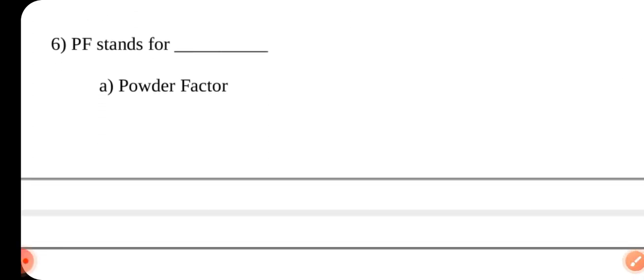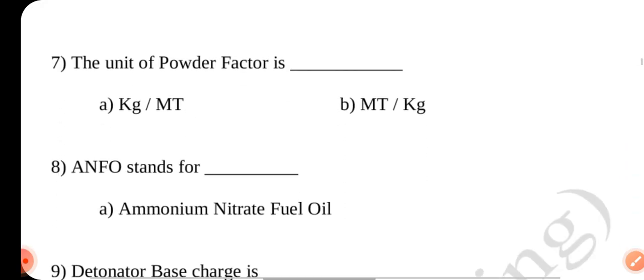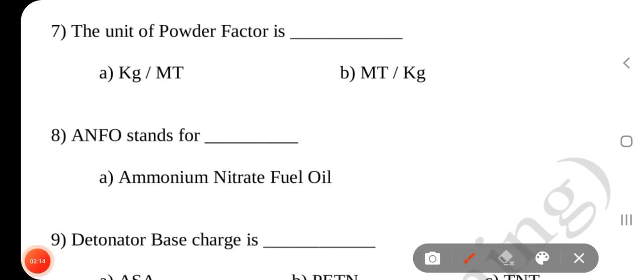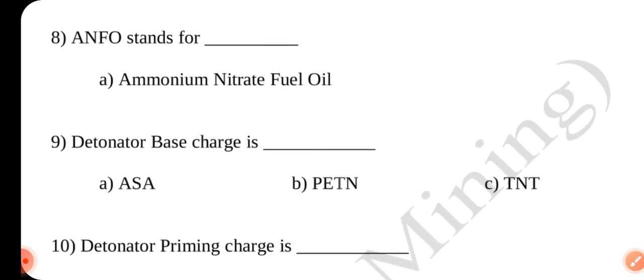Question number 6: PF stands for Powder Factor. Answer is A. Question number 7: The unit of powder factor is metric ton per kg. Answer is A. Question number 8: ANFO stands for Ammonium Nitrate Fuel Oil. Answer is A.